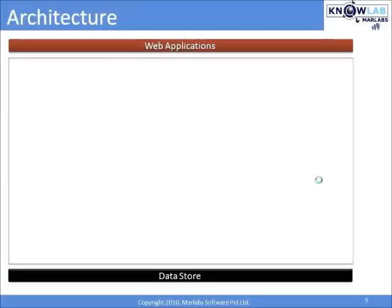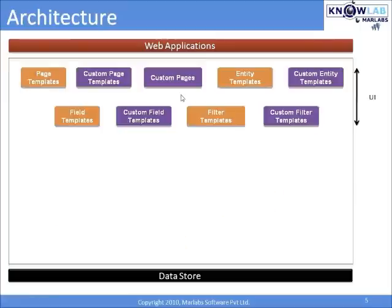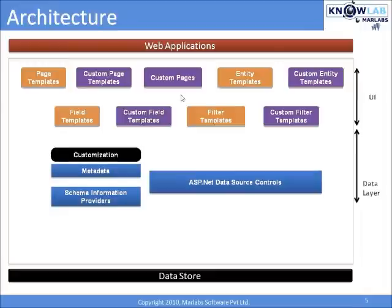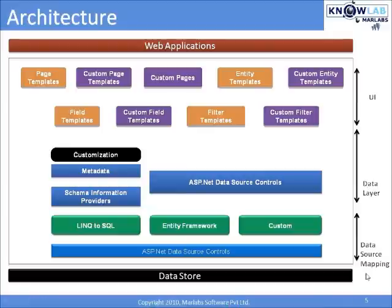Let me talk about the architecture now. Dynamic data gets the schema information or metadata from the data model that represents database entities as CLR types. Dynamic data architecture contains three layers. First, the presentation layer, which contains the elements used to create interfaces for displaying and editing data entities. Next is the data layer, which contains the data model representing the database entities as CLR types. It also has a data source mapping layer containing elements that are part of CLR but are used by dynamic data — technologies such as LINQ to SQL and ADO.NET Entity Framework used to generate data models.